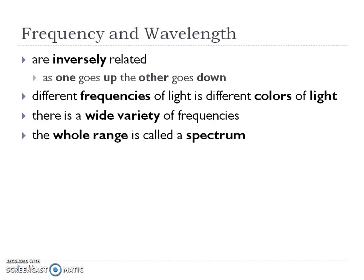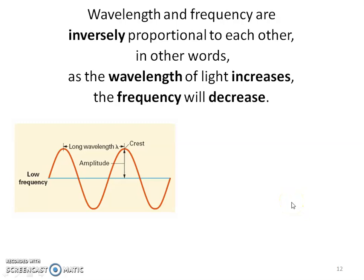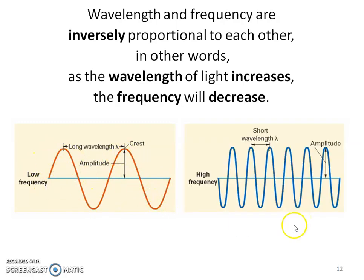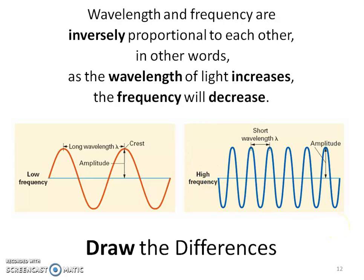There are different frequencies of light, and they give us that variation of color. But there's a wider range of frequencies than just visible light — the whole range is called the spectrum. If we look at a long wavelength over a given distance, the longer the wavelength, the lower the frequency — fewer waves can pass through that point. Conversely, a shorter wavelength means high frequency. Make sure to draw these differences in your notes.